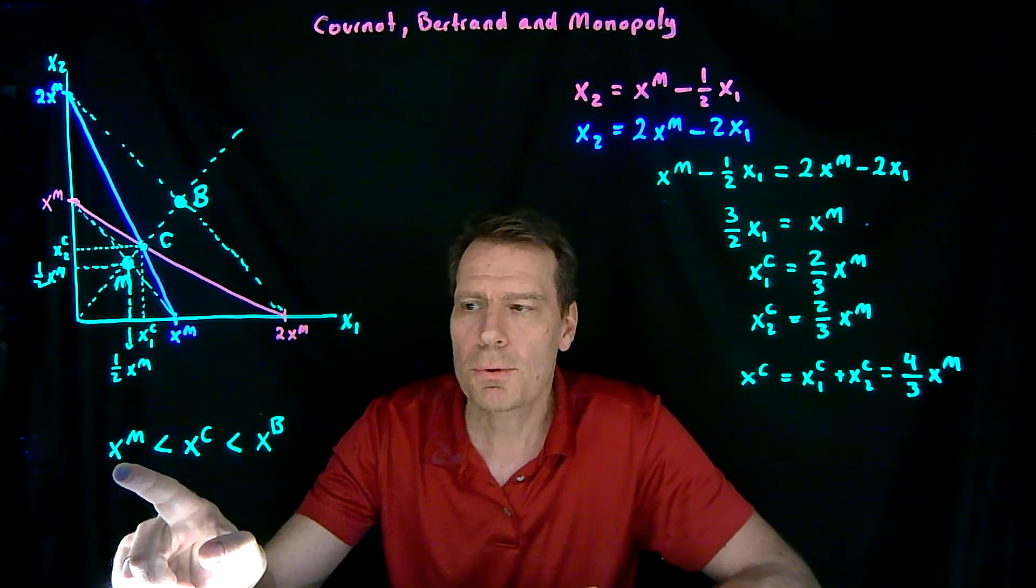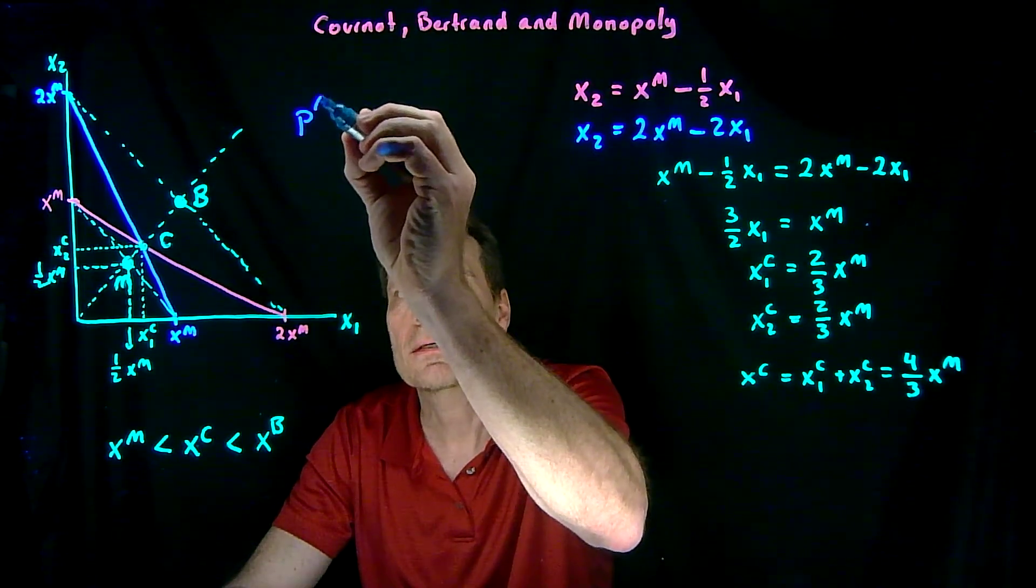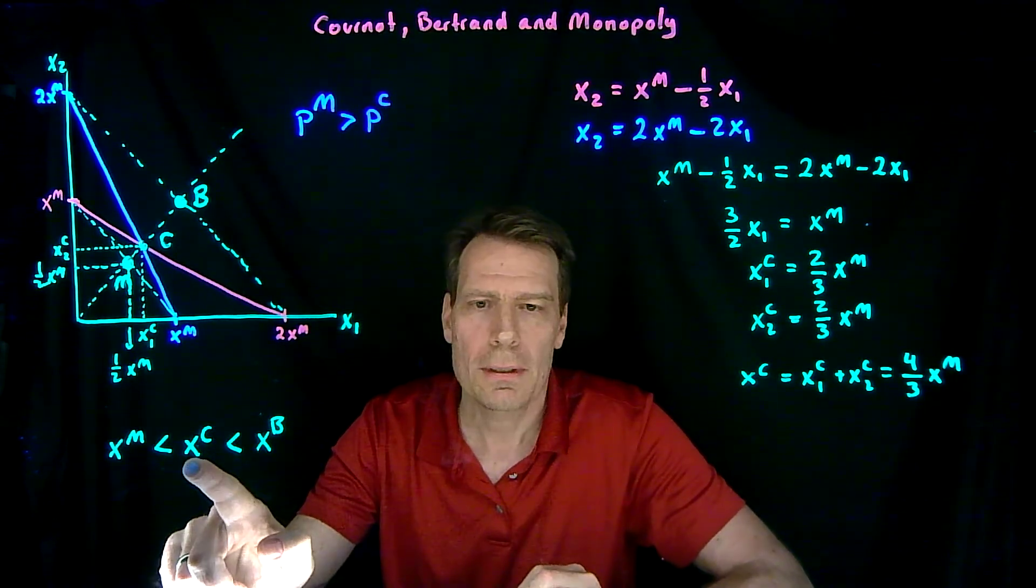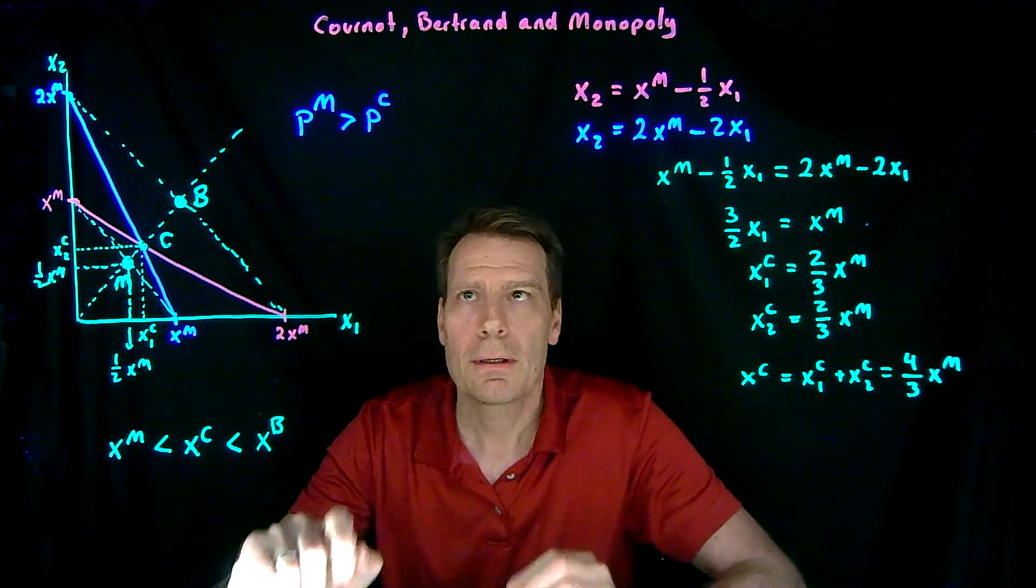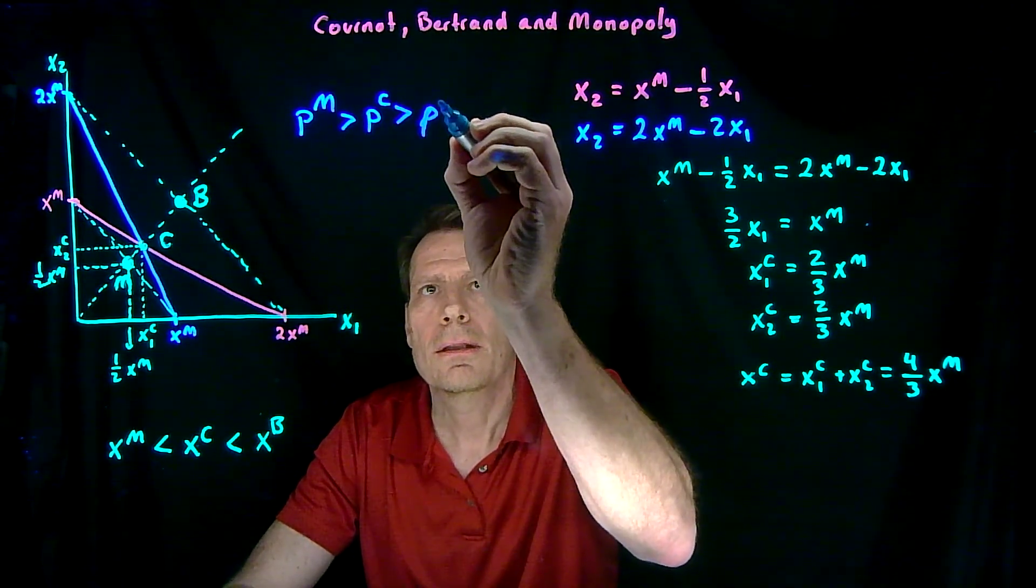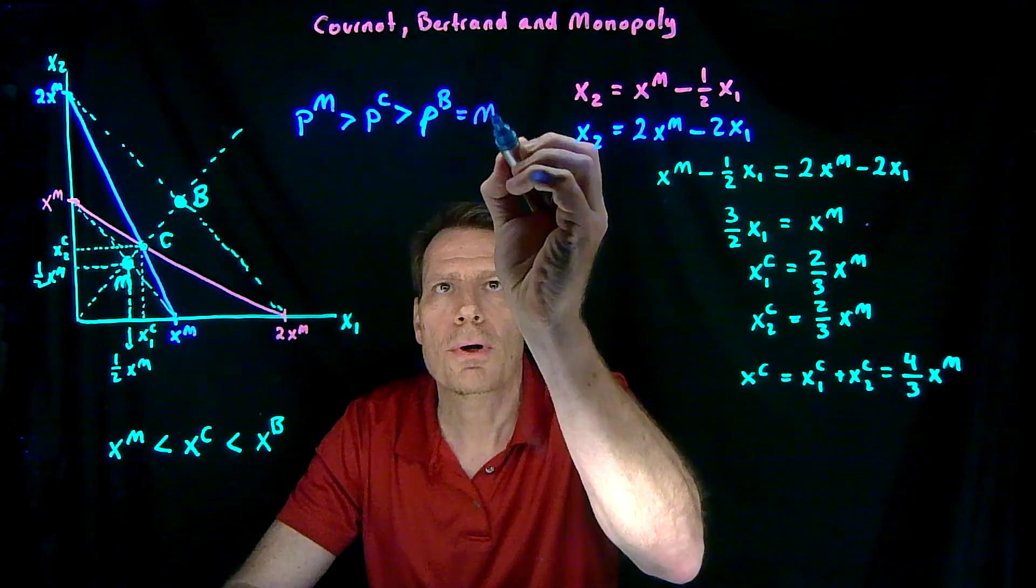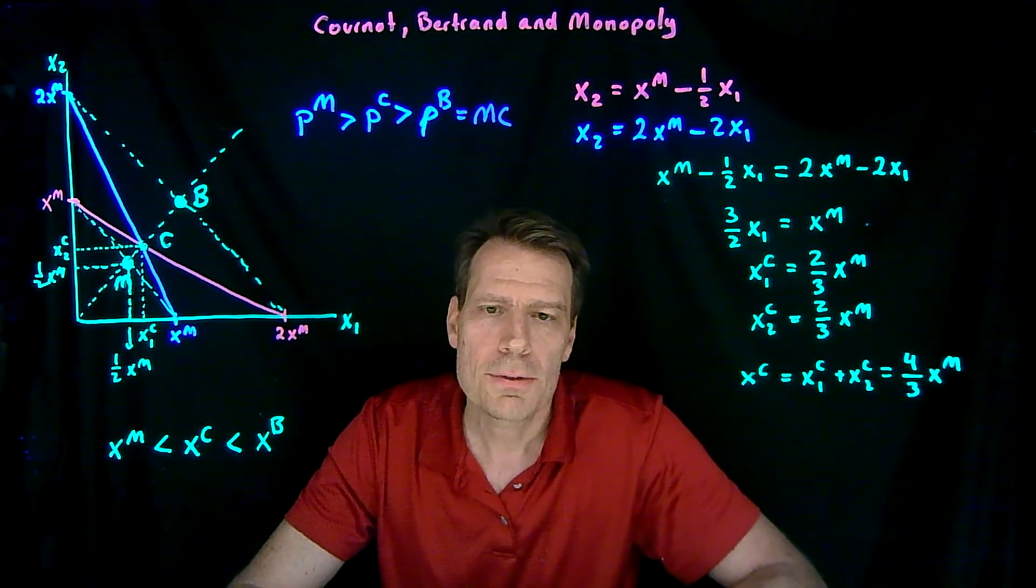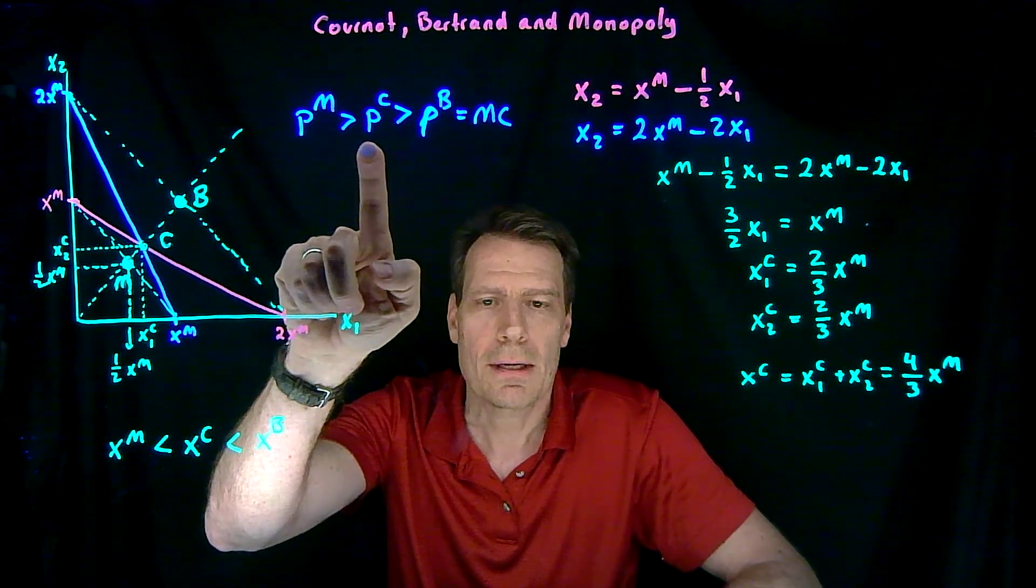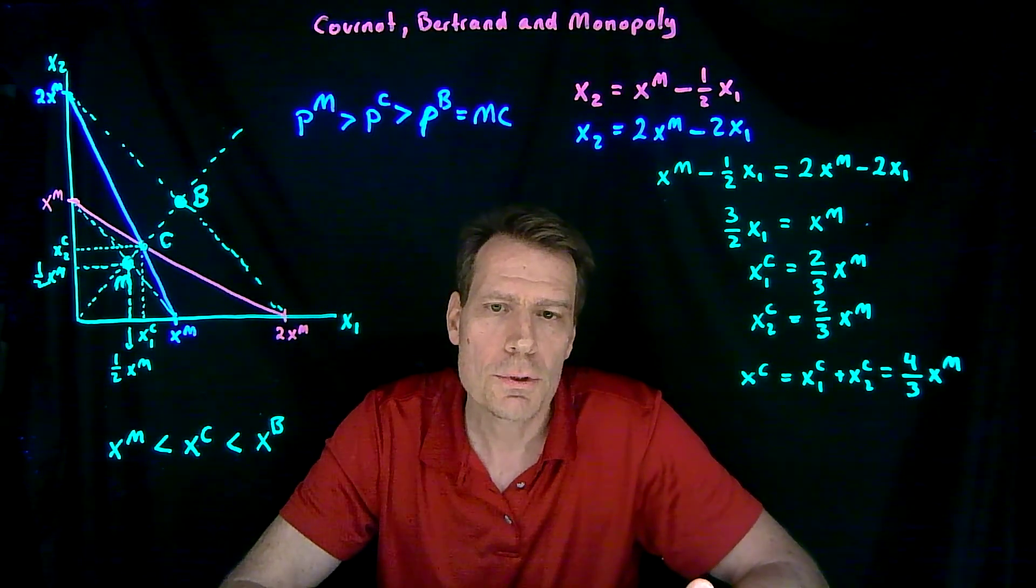For a monopoly that's producing the least, the price is going to be the highest. So the monopoly price is going to be greater than the Cournot price. And the Cournot quantity is less than the Bertrand quantity, so the Cournot price is going to be greater than the Bertrand price. In fact, we know the Bertrand price has been driven down to marginal cost. So we can see that in these market structures, the price will be greatest on the monopoly, greater than on Cournot competition, which will be greater than Bertrand competition, which will be equal to marginal cost.